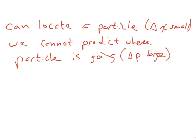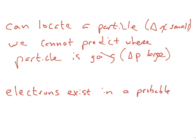Putting these two concepts together — wave-particle duality and the uncertainty principle — we can say that electrons exist in a probable space in an atom. If you look at the hydrogen atom, you know it has one electron. We know roughly where that electron is, and where we define that probable location we call it an orbital.